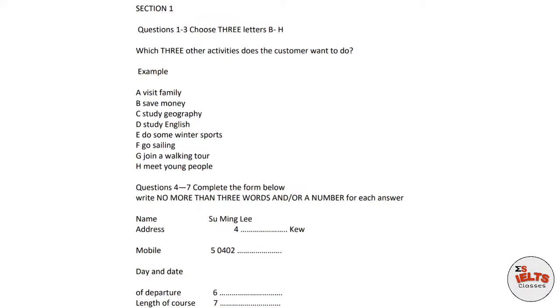One thing I really want to do is go to Christ Church. I have relatives living there that I can stay with. The woman says she has relatives living there, so the first activity, visit family, has been circled. Now we shall begin. You should answer the questions as you listen because you will not hear the recording a second time.